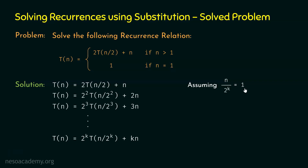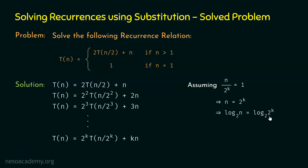From n/2^k = 1, multiplying both sides by 2^k gives n = 2^k. Taking logarithm base 2 on both sides: log₂(n) = log₂(2^k). Applying the logarithm property — log(a^b) base c = b * log(a) base c — we get log₂(n) = k * log₂(2) = k * 1 = k. Therefore, k = log₂(n).